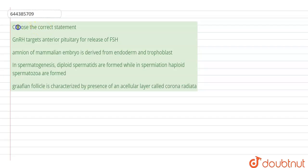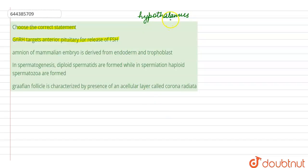Hello students. The question here says: choose the correct statement. The first statement is that GnRH targets the anterior pituitary for the release of FSH. GnRH is the gonadotropin releasing hormone, which is secreted from the hypothalamus, and then it goes and targets the anterior pituitary for the synthesis of its hormones, one of which is FSH — the follicle stimulating hormone.